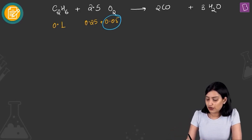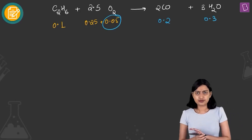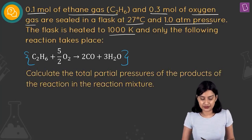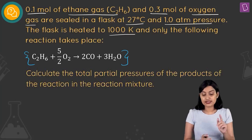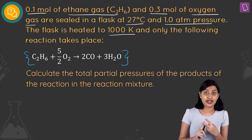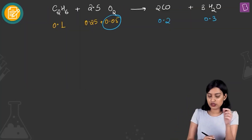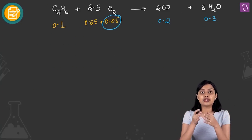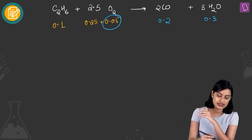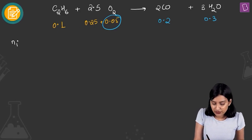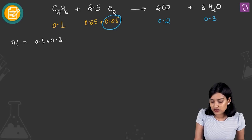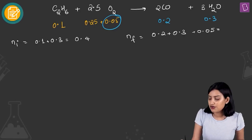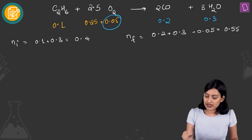On the product side, 0.1 mole of ethane gives 0.2 moles of carbon monoxide and 0.3 moles of water vapor. The initial number of moles is 0.1 (ethane) + 0.3 (oxygen) = 0.4. The final number of moles is 0.2 (CO) + 0.3 (H₂O) + 0.05 (unreacted O₂) = 0.55 moles.